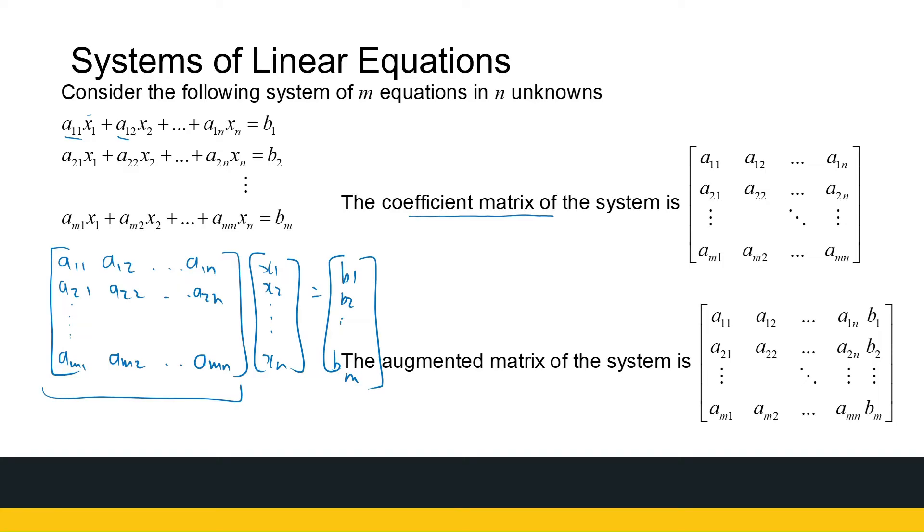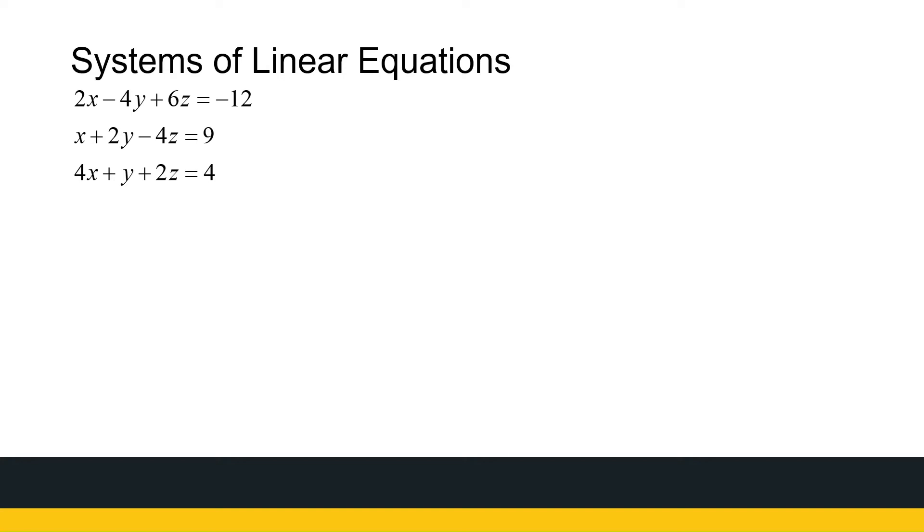And then we define what we call an augmented matrix. I take my coefficient matrix and I put another column in there, which is this column b1 to bm. I add another column to my coefficient matrix. That's called the augmented matrix. And I'm going to use these matrices to solve these systems.